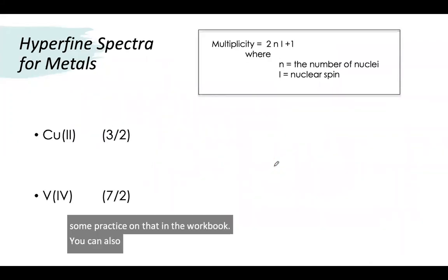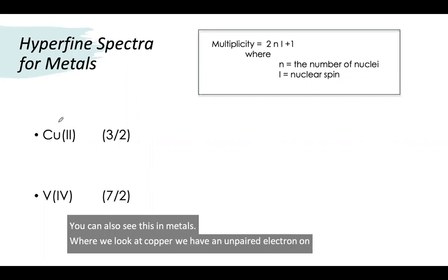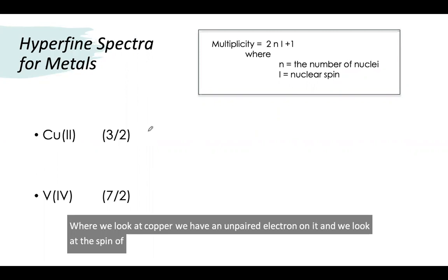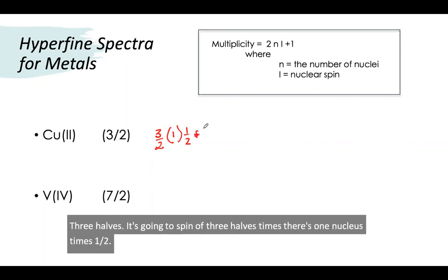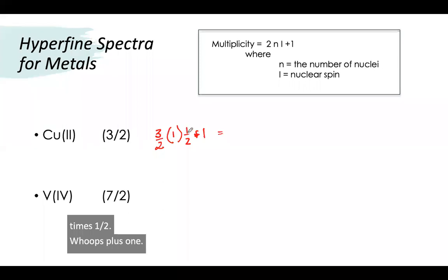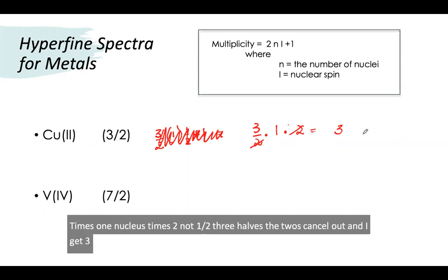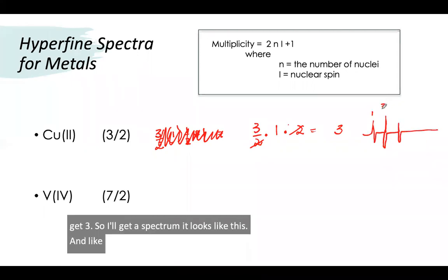You can also see this in metals where we look at copper. We have an unpaired electron on it and we look at the spin of the nucleus, which is three halves. So it's three halves times one nucleus times two—not a half because it's three halves. The twos cancel out and I get three, so I'll get a spectrum that looks like this. Like NMR, this is going to be a ratio of one to three to one.